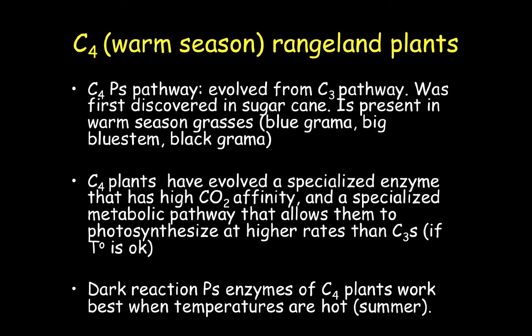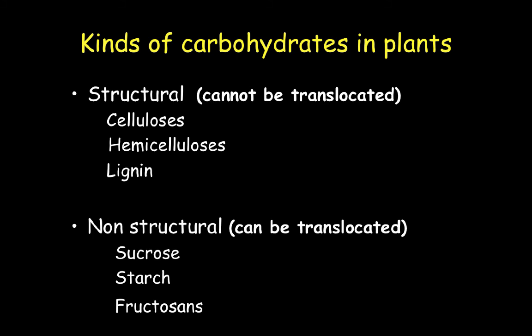Some C4 grasses we deal with as forage crops include sudan, triticale, timothy, and other hay species. Carbohydrates that occur in plants come in two major forms: structural or non-structural. Structural carbohydrates cannot be translocated — they occur in cellulose, hemicellulose, and lignin, and provide structure for the plant such as stem walls. Non-structural carbohydrates can be translocated, meaning they can move around the plant, and they occur as sucrose, starch, and fructosans. Non-structural carbohydrates provide variation in the nutrients a plant can provide, which is why plants have higher nutrients during the maturity season and lower nutrients during the dormant season.